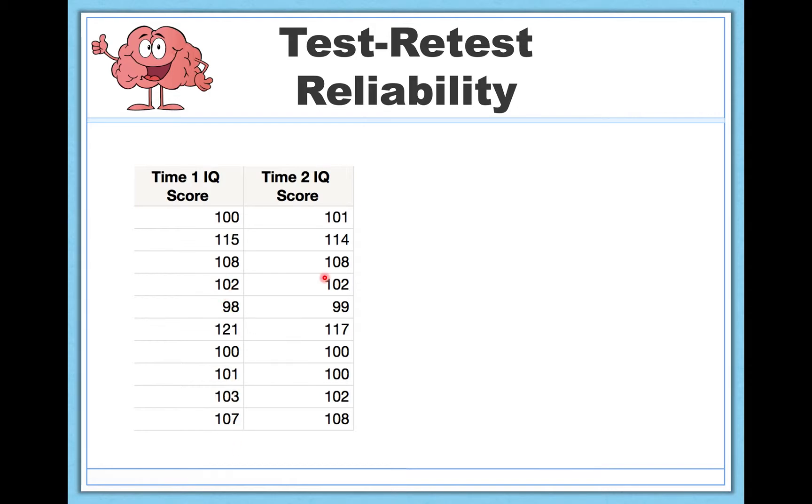And across all of these participants, you're going to see we're typically only one or two points off. Here's a little bit of a bigger difference. Maybe just didn't have his coffee this morning. But overall, we would say that this has good test-retest reliability. The scores tend to cluster together very closely, and if you actually did the correlation between these two variables, you would get an extremely strong correlation, 0.99, almost a perfect relationship between how people do in the beginning to how people do at the end.